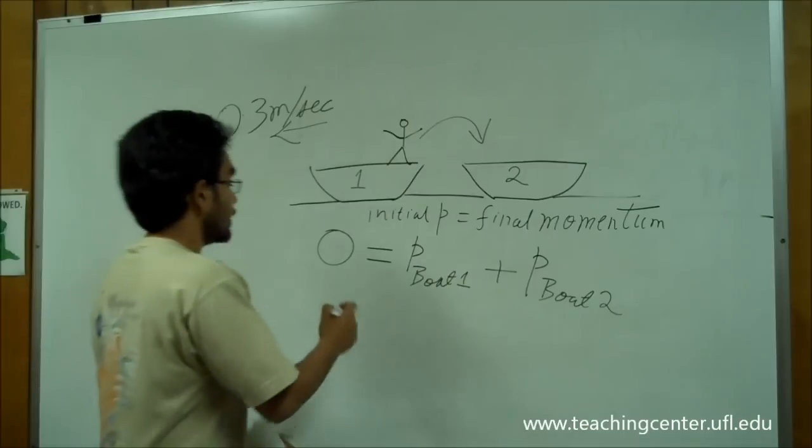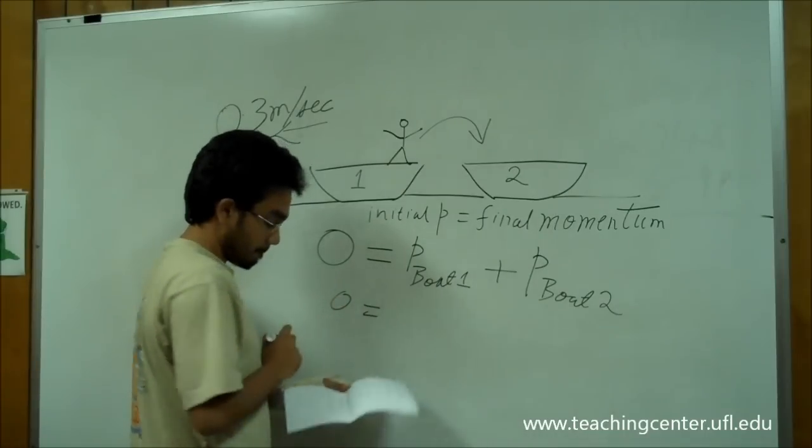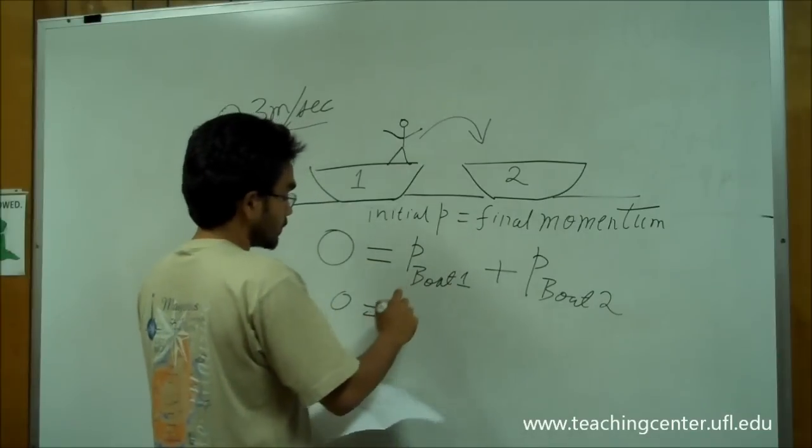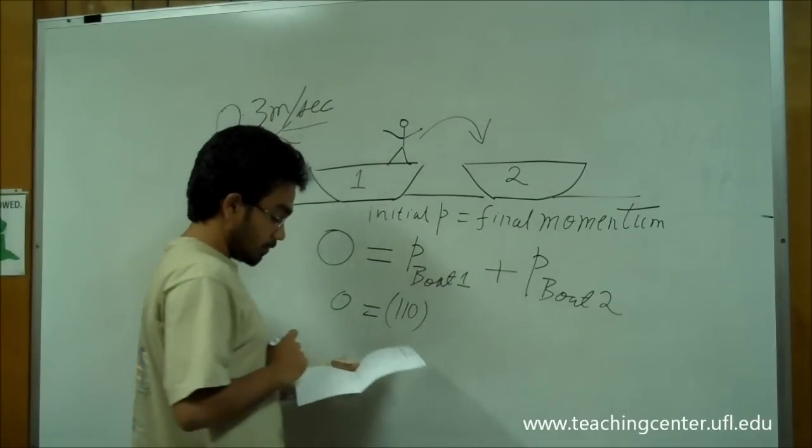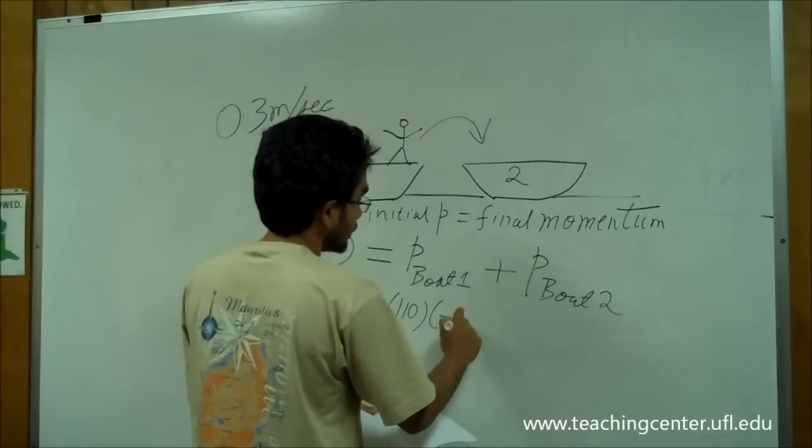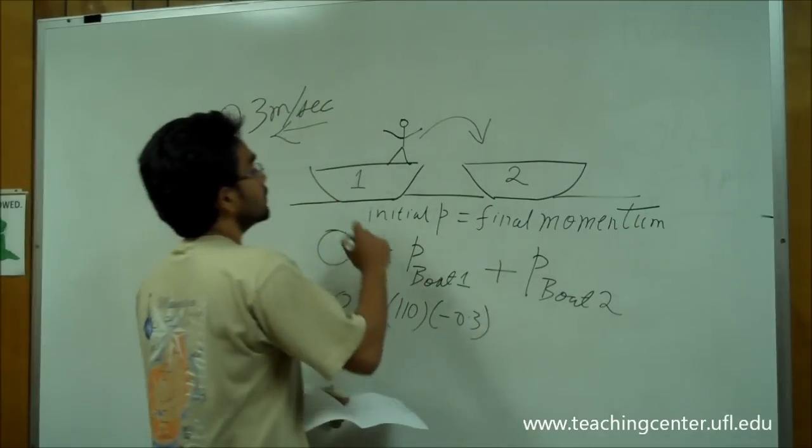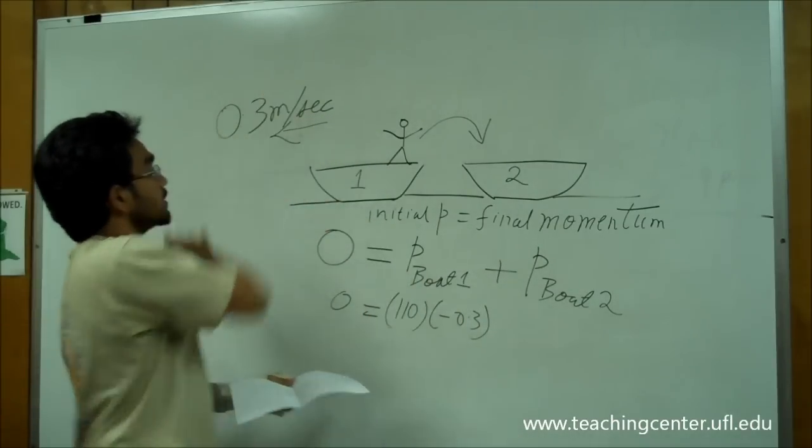Now, having done that, we plug in the values, so we get the mass of the boat, which is 110, times 0.03, which is the speed of the boat, which is the speed at which the boat is moving.